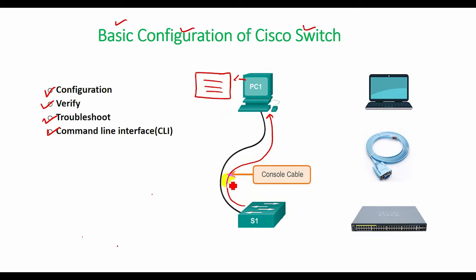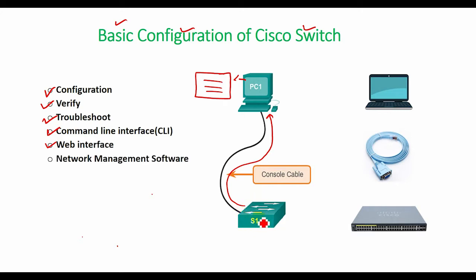Cisco Catalyst switches also support other methods to both monitor and configure a switch. For example, a switch can provide a web interface so that a user can open a web browser to connect to a web server running in the switch. Switches can also be controlled using network management software. Like any other piece of computer hardware, Cisco switches need an operating system — Cisco calls this the Internetwork Operating System, or IOS.